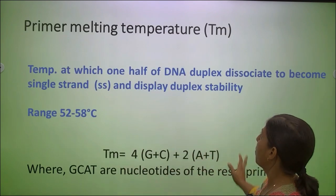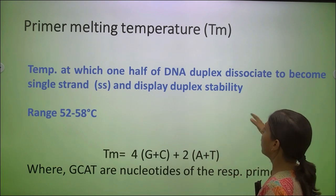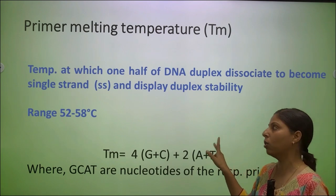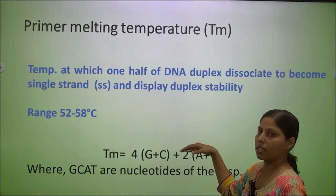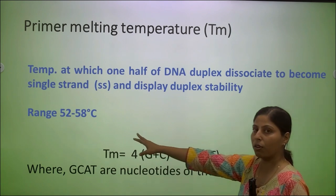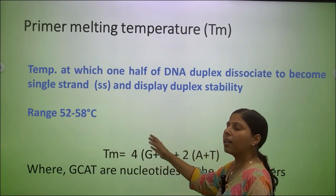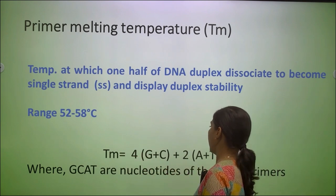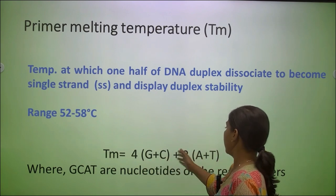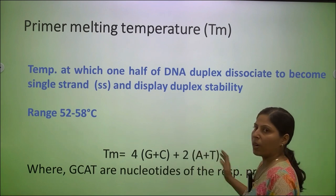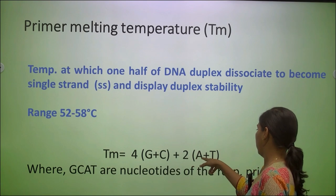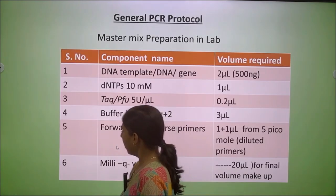The melting temperature is the temperature at which half of the DNA duplex dissociates to become single-stranded, and it displays duplex stability. The double-stranded DNA must dissociate into single strands so that synthesis can occur. The temperature for this is typically 52 to 58 degrees centigrade, and can go up to 60 degrees centigrade. The formula calculates melting temperature based on the number of G+C versus A+T bases. For example, if ATGC ATGC is the primer sequence, we count the guanine, cytosine, adenine, and thymine to calculate the melting temperature.